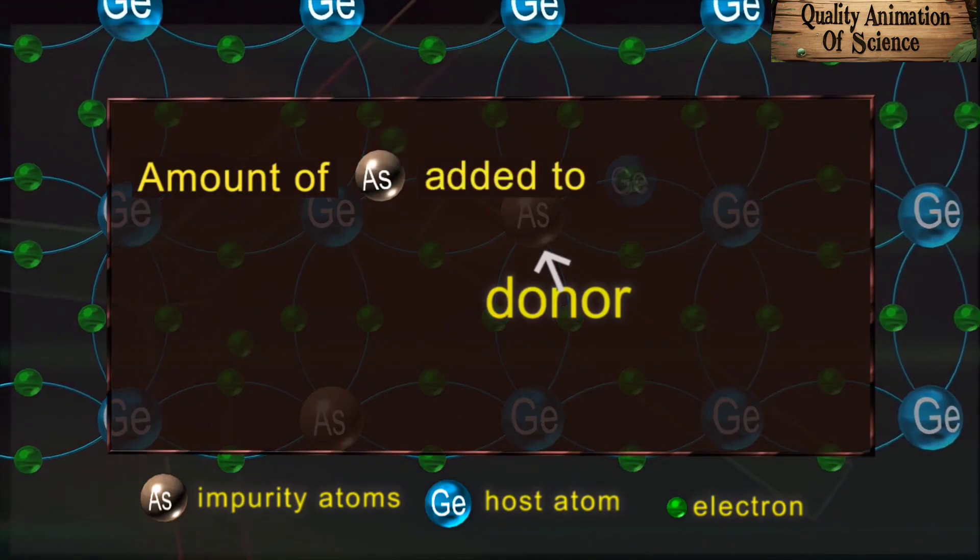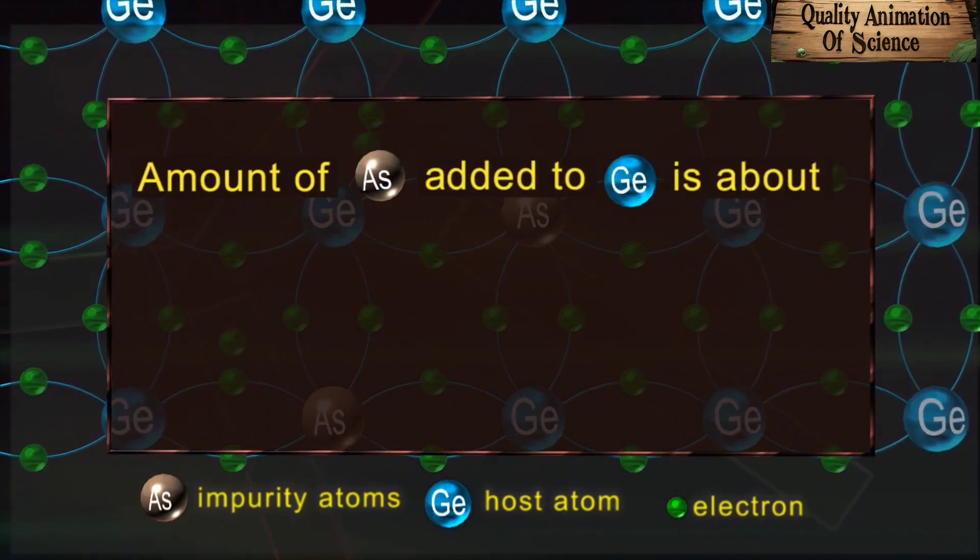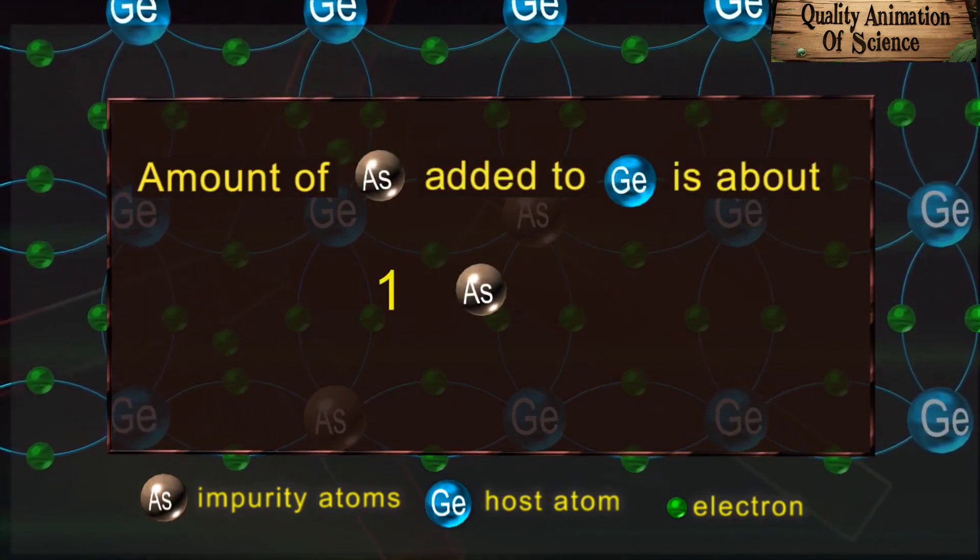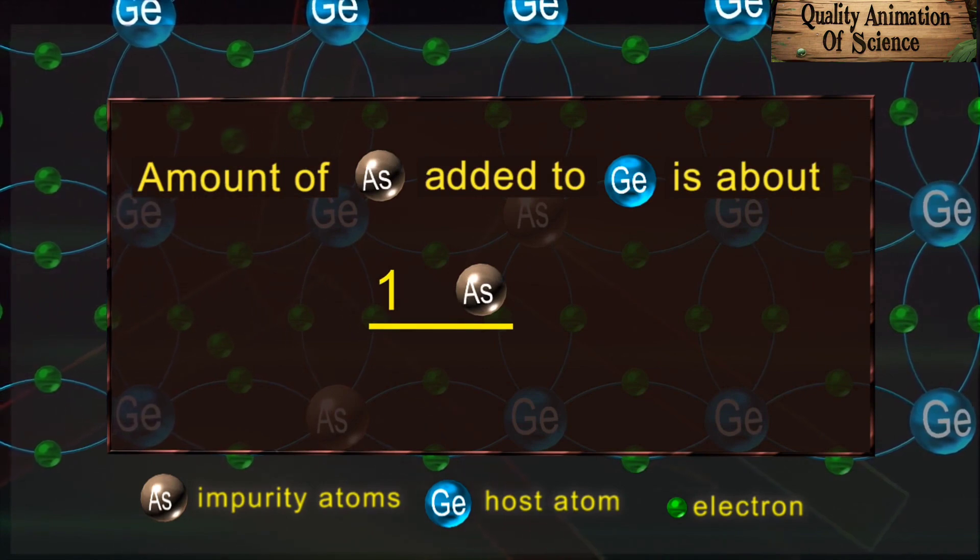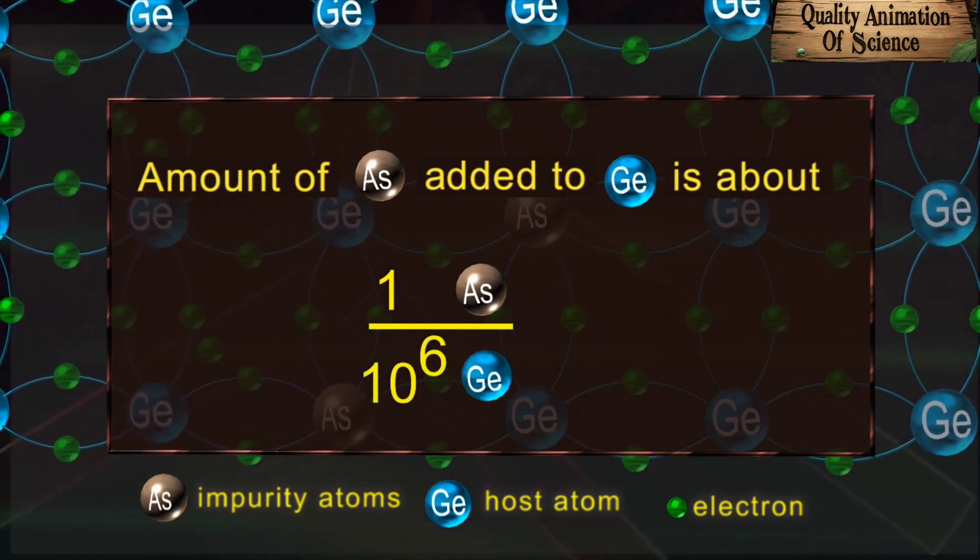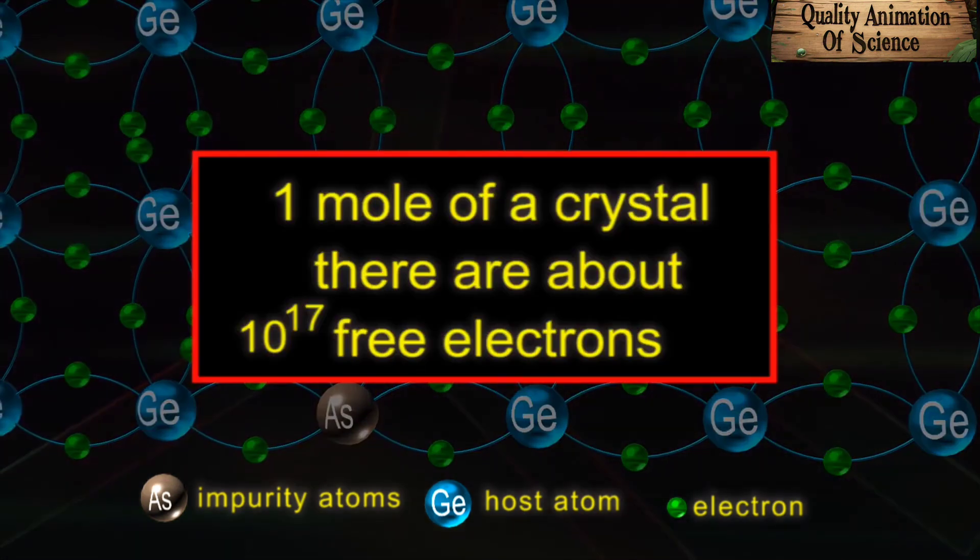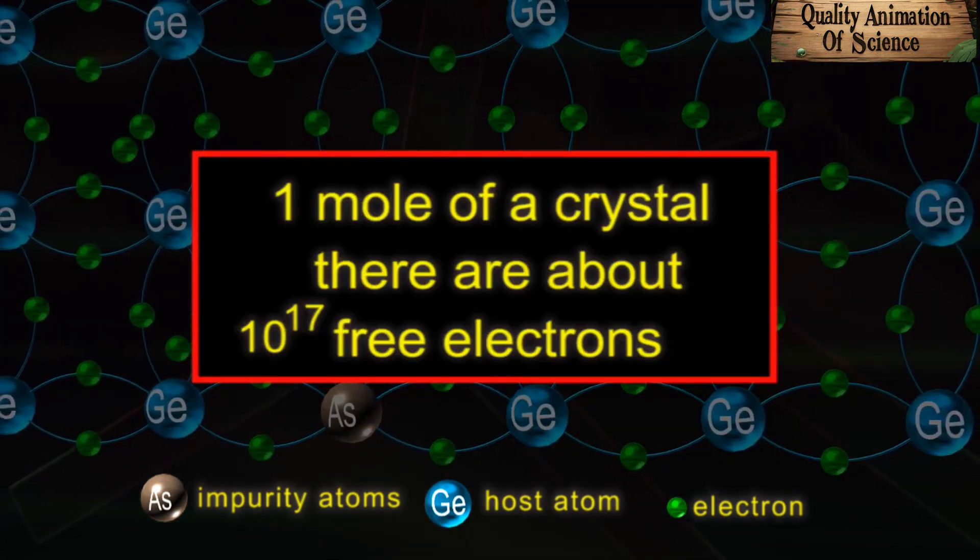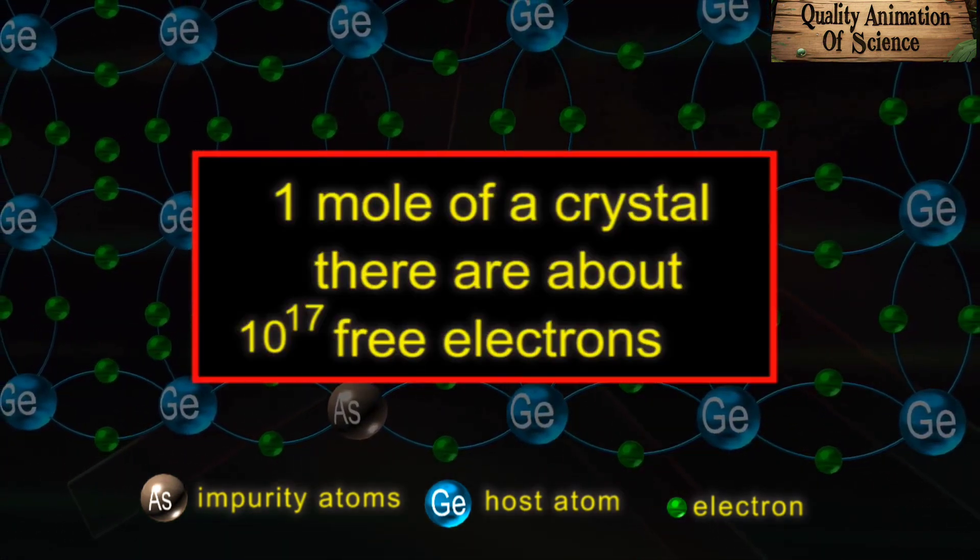The amount of donor impurity added to the host is about one donor atom per 10 raised to 6 host atoms. In one mole of a crystal, there are about 10 raised to 17 free electrons.